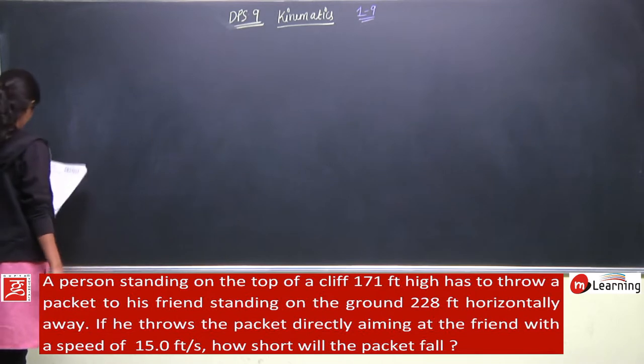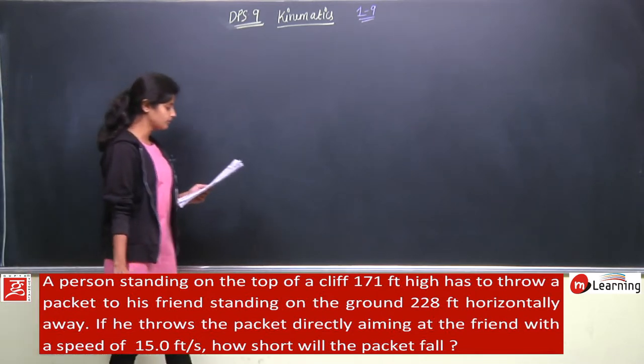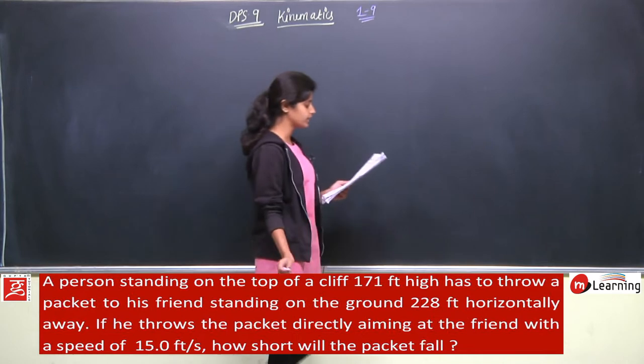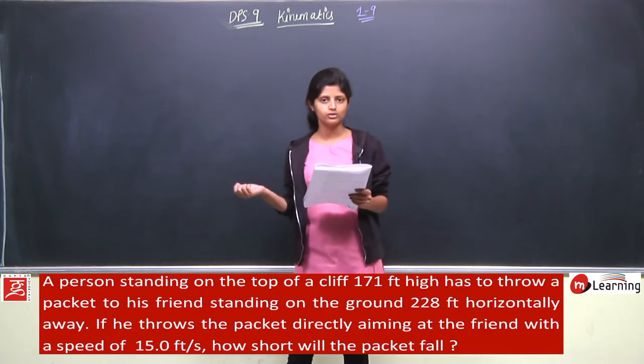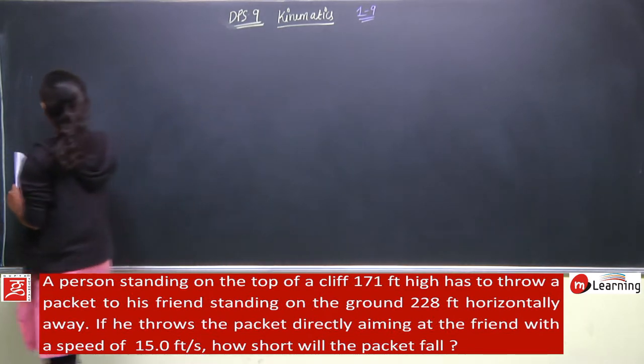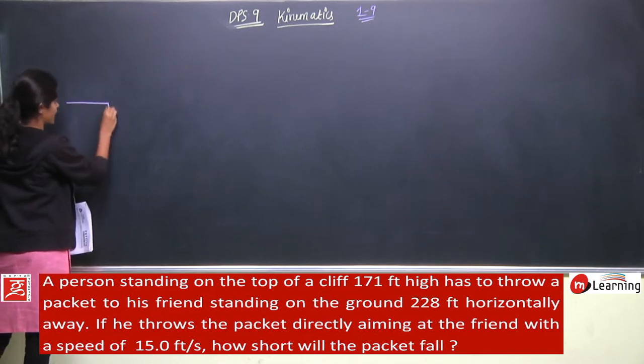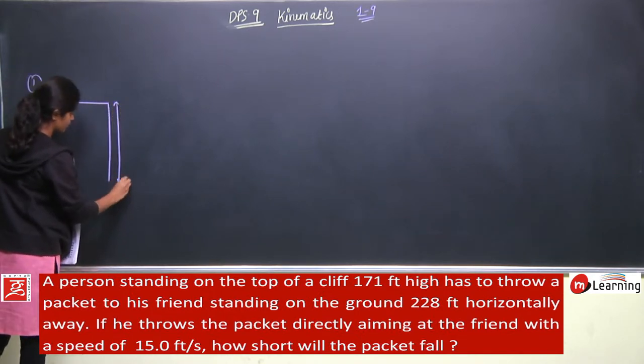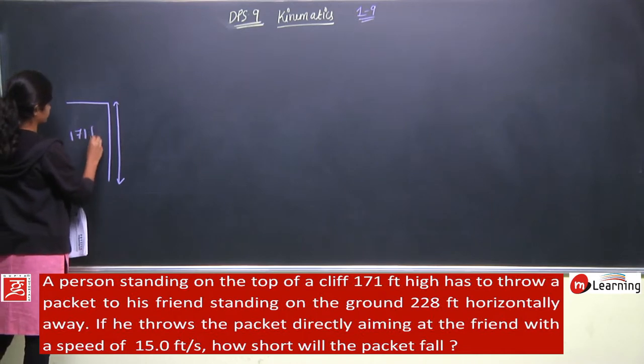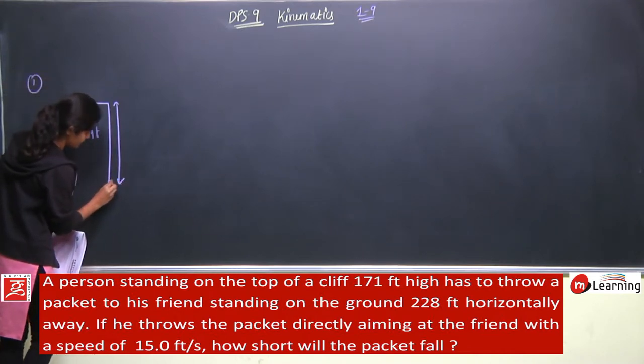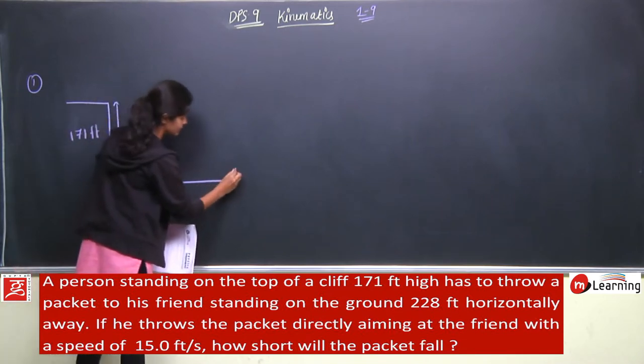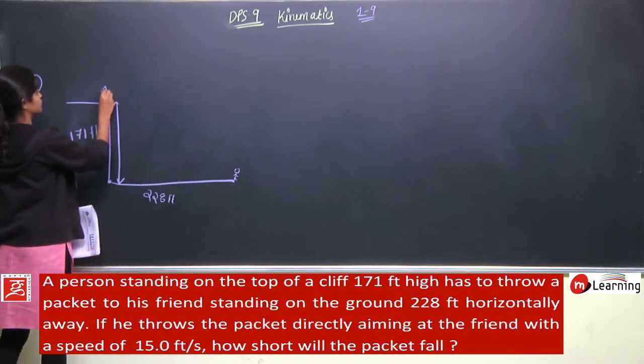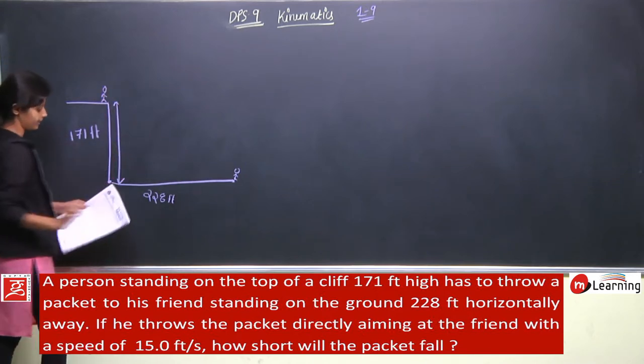Let us start with the first question: a person standing on the top of a cliff 171 feet high has to throw a packet to his friend standing on the ground 228 feet horizontally away. Cliff ki height dee rakhi hai 171 feet aur yahaan se 228 feet ki doori pe iska friend khada hua hai and he has to throw one packet to his friend.